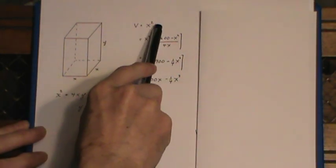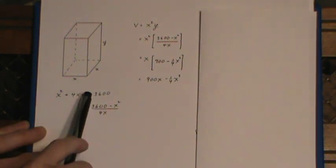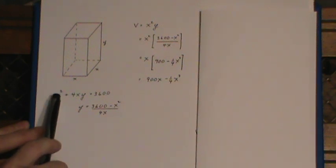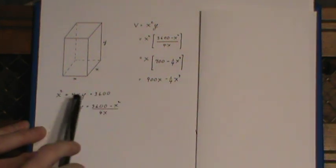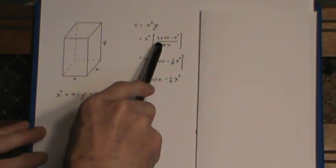Now since I have two variables here I have to get rid of one of the variables so I come back to my constraint equation, the surface area, move the x squared to the other side and divide by 4x. That gives me a substitution for y.